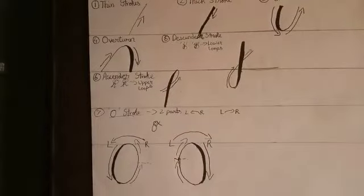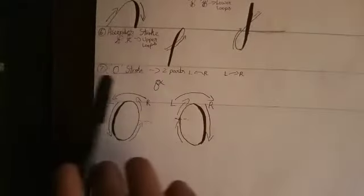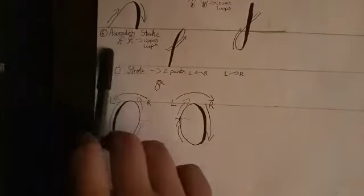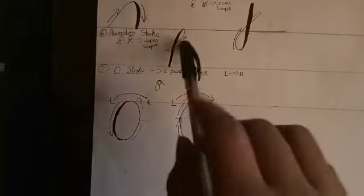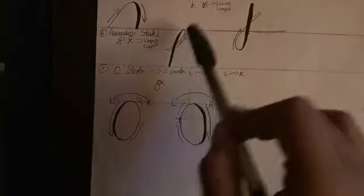The sixth rule is ascender stroke. Letters like H and K have upper loops. When you do like this, this part comes down, so you need to double this part and fill it.